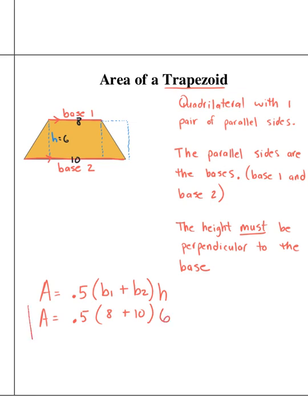And then we just enter this into our calculator, all in one shot. 0.5 parentheses 8 plus 10 parentheses times 6.